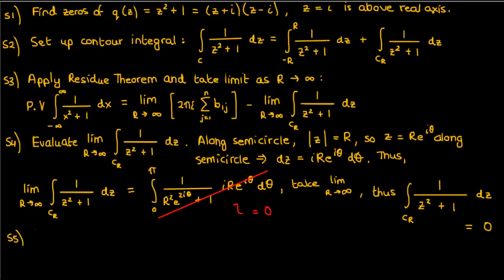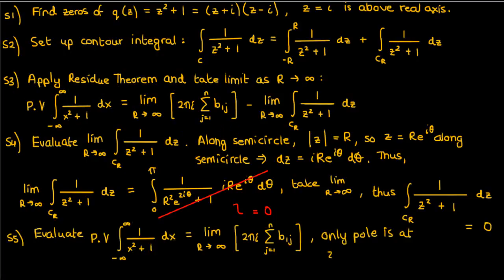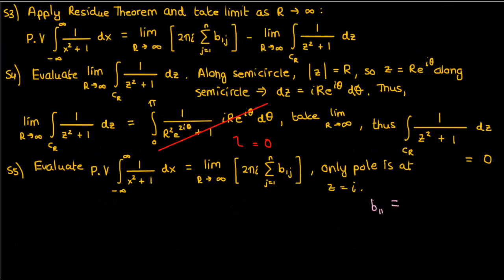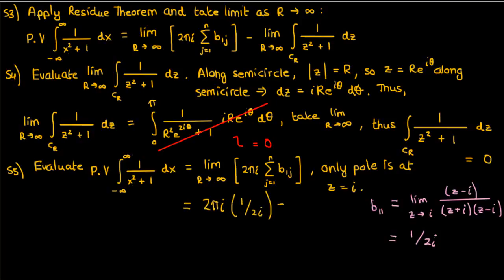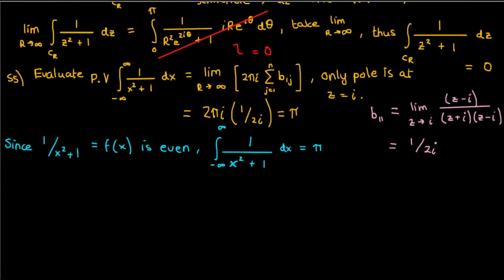Now we're left with step 5. The only pole we're concerned with is at z equals i. To find the residue of 1 over (1 + z²) at z equals i — which is a simple pole since (z − i) appears only once in the denominator — we multiply by (z − i) and take the limit as z approaches i. After computation, the residue of 1 over (z² + 1) at z equals i is 1 over 2i. Plugging it back into the residue theorem equation, the principal value of the improper integral is 2πi times 1/(2i), which is just π. And because 1 over (x² + 1) is an even function, we can conclude that the improper integral converges and equals the principal value, so the improper integral of 1/(x² + 1) over an infinite interval is π.